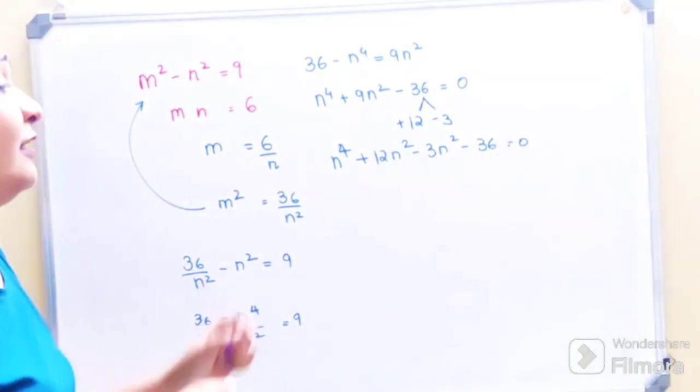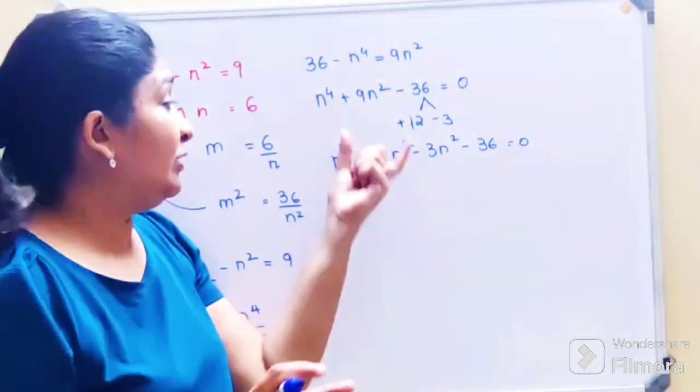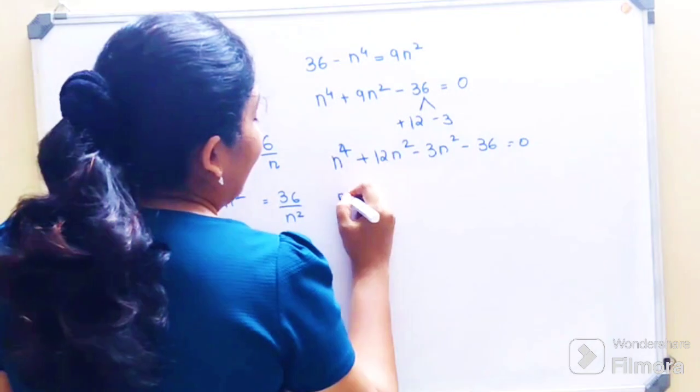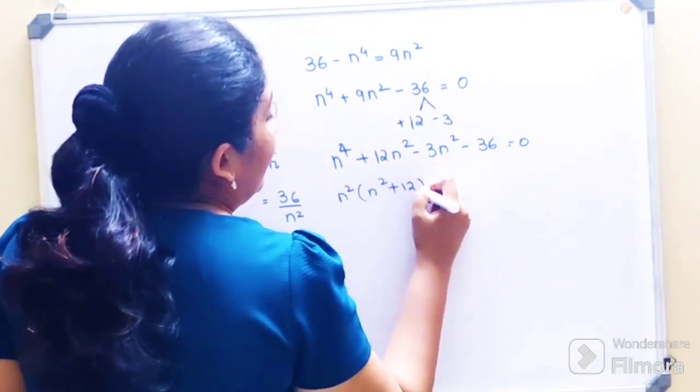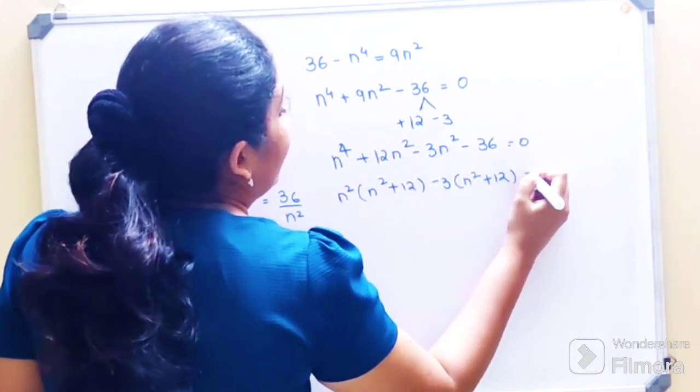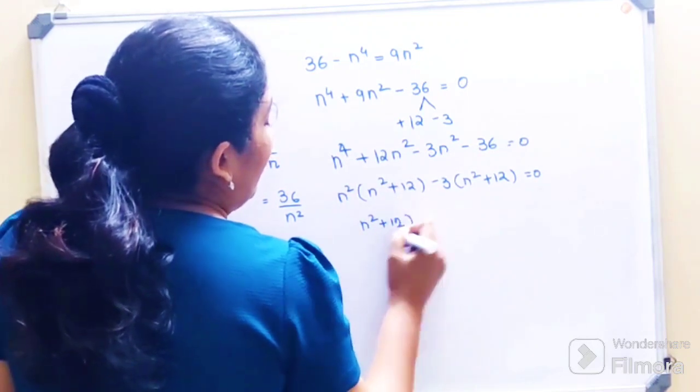Please understand, when you have n raised to 4 and n square and if you're not doing any substitution, then you should carry them as is. So here we'll have n square common, so n square plus 12, minus 3 common again, n square plus 12 is equal to 0. So n square plus 12 or n square minus 3 is equal to 0.